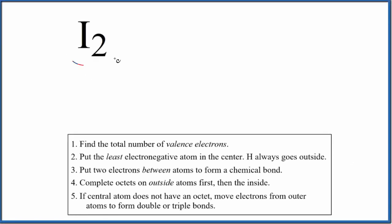Let's draw the Lewis structure for I2. This is iodine. It could be a gas or it could be a solid. So for I2, when we draw the Lewis structure, the first thing we do is find the number of valence electrons.